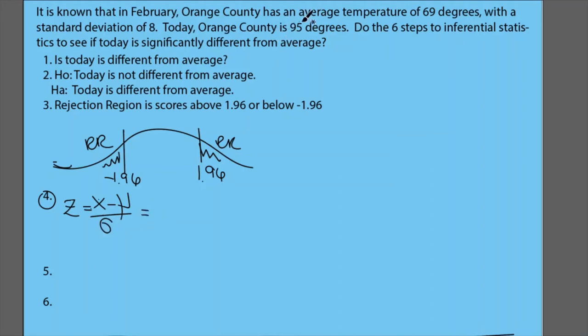So it's going to be 95 minus 69 divided by 8. So this is where I need to do my calculator. And I'm just going to type it in. You can trust me. I'm using my calculator. So it's 95 minus 69 divided by 8. And so this comes out to be 3.25.